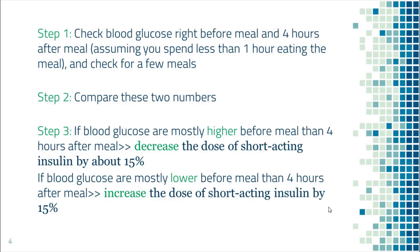When you suspect the short-acting insulin dose is not correct, the first step is to check blood sugar right before the meal and four hours after the meal, and check for a few days. Compare these two numbers. If blood sugar is mostly higher before the meal than four hours after, reduce short-acting insulin by about 15% for that meal. If it is the other way around, take 15% more for that meal.